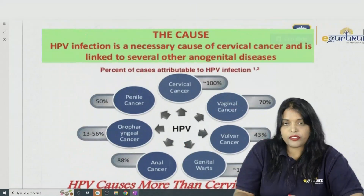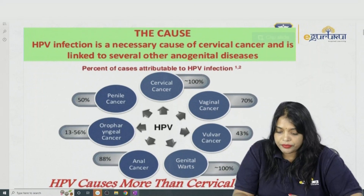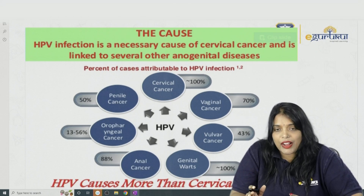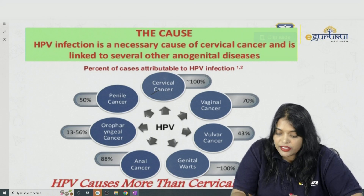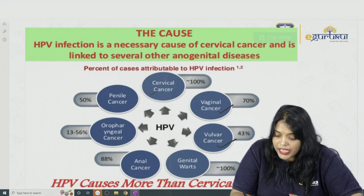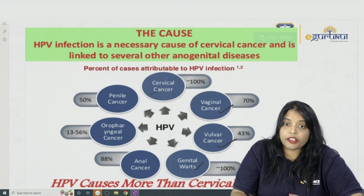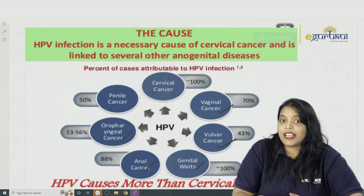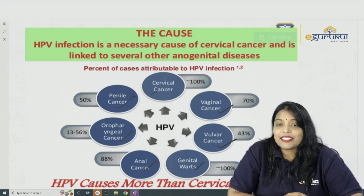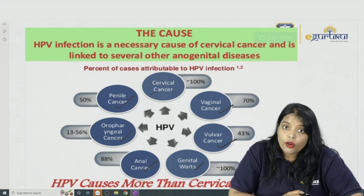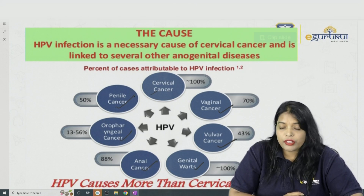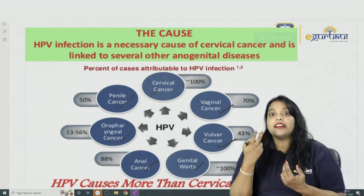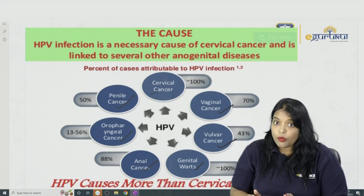Let us review all the viral proteins and then come back to the answer. Most importantly, HPV does not cause only cervical cancer — it also causes vaginal cancer, vulval cancer, genital warts (condyloma acuminata, HPV 6 and 11), anal cancer, oropharyngeal cancer, and penile cancer. That is why HPV vaccination should be given to both males and females.